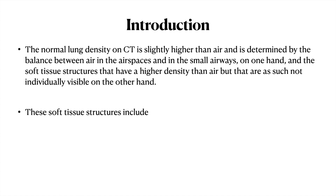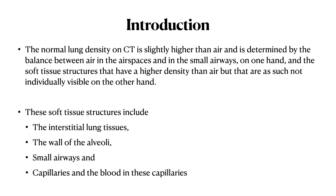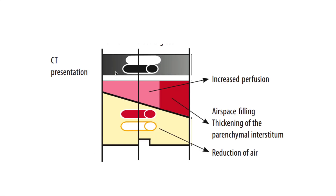The soft tissue structures include the interstitial lung tissue, the walls of the alveoli and small airways, and also the capillaries and the blood in these capillaries. So apart from the air, these small tissue structures also affect the density of the lungs. The density of the lungs is dependent on blood perfusion, the airways, and soft tissues. If the density is increasing, it means that perfusion has increased, or there is a reduction in air, or thickening in the interstitium.